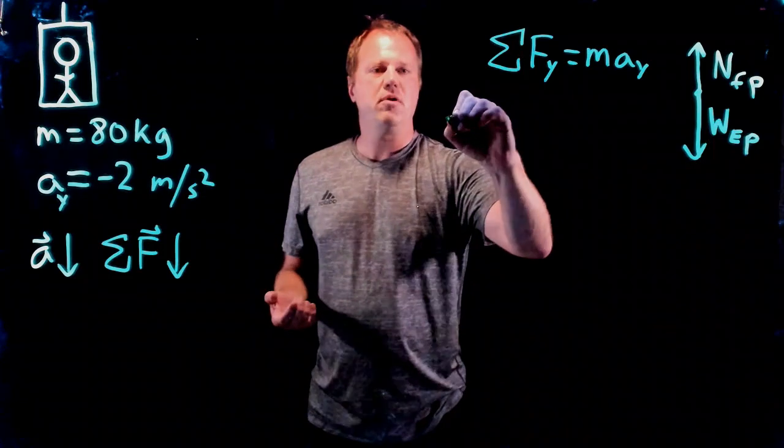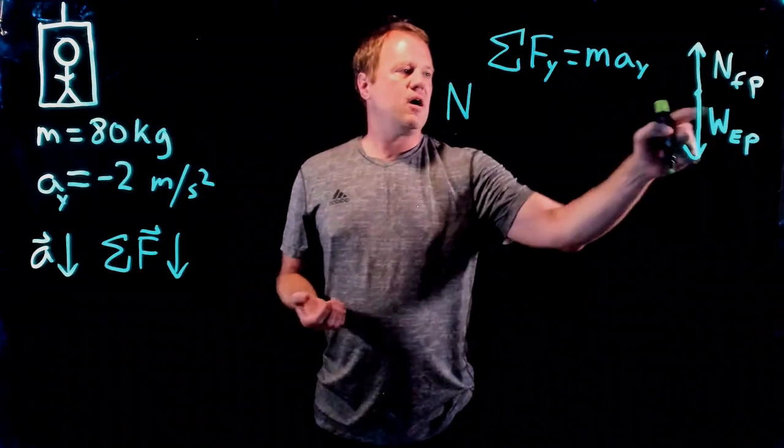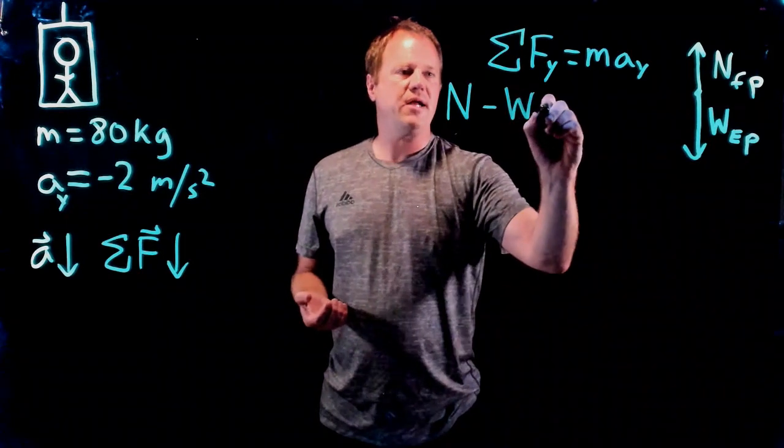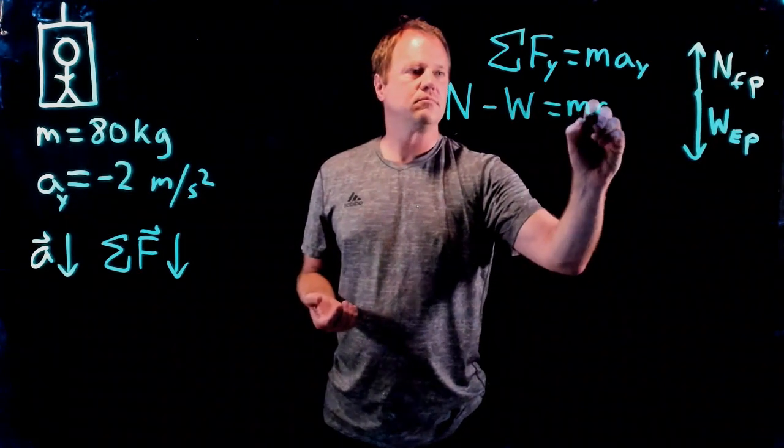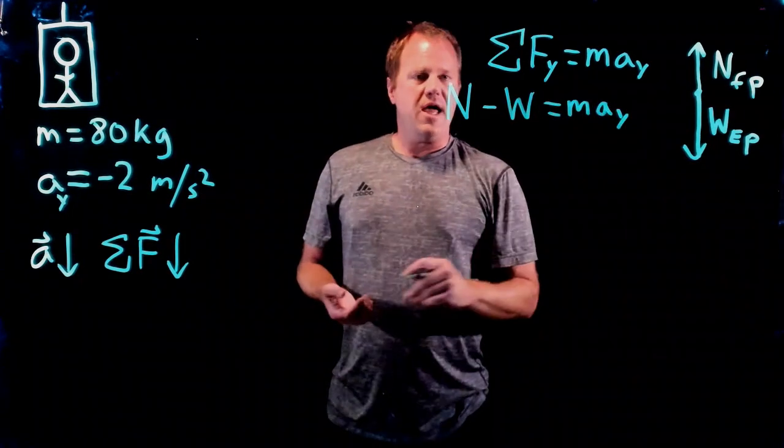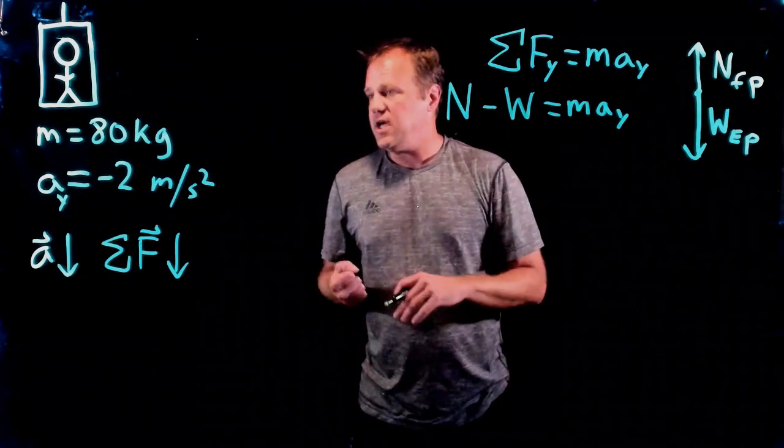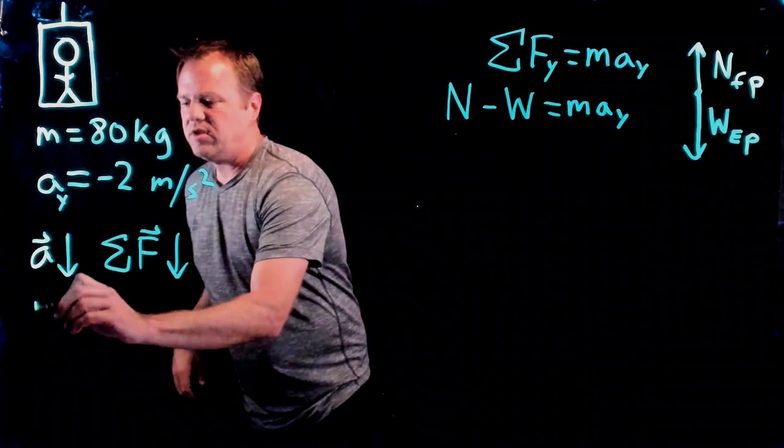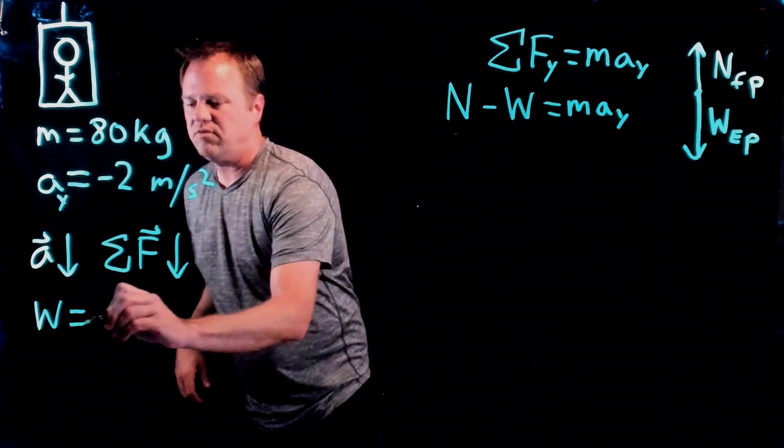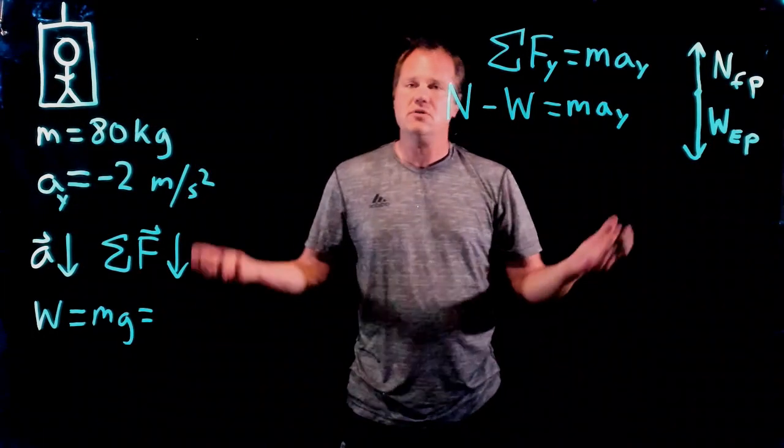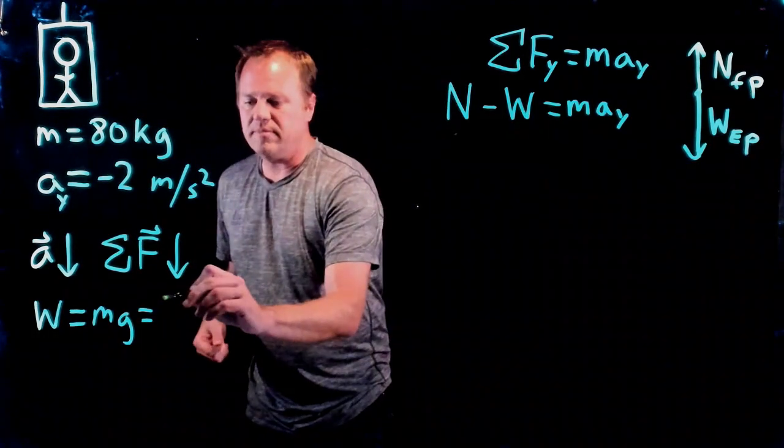I have a normal force up in the positive direction and a weight force down, so I put a minus sign in front of that. This one I can calculate quite easily right from the beginning. Let's go ahead and calculate that—just use m times g as always. It's implicit that this situation occurs on earth, so I use 9.8 for g.